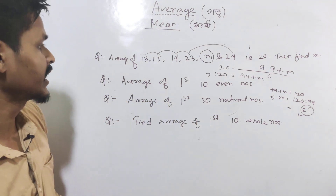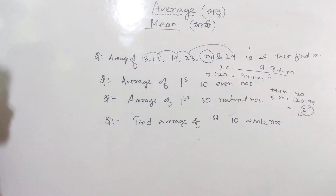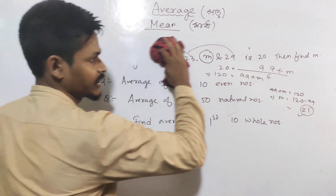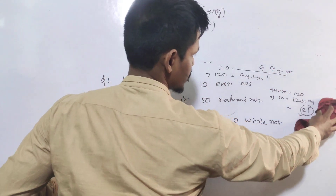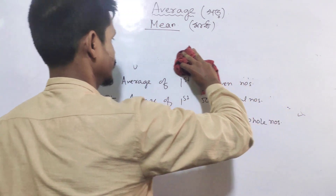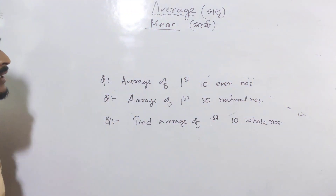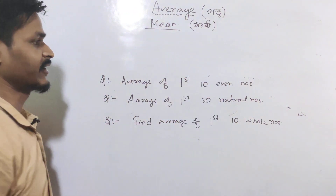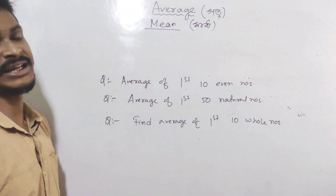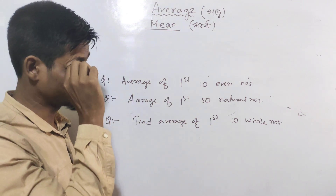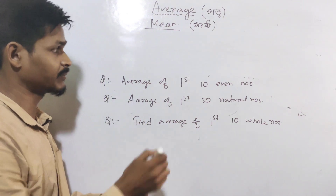Next question: find the average of the first 10 even numbers. Even numbers start from 2.